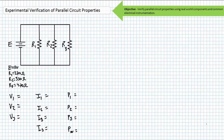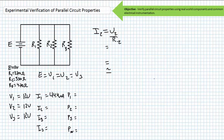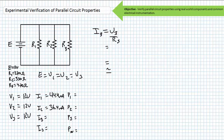Here's how I'm going to solve for the desired quantities — you may have used different steps in a different sequence, but our answers should agree. I'll start by using the most fundamental basic parallel property: the voltage across elements in parallel is the same. E equals V1 equals V2 equals V3. If the source voltage is 12 volts, so is V1, V2, and V3. With known voltage drops across known resistors, we can use Ohm's law: I1 equals V1 divided by R1, giving approximately 44.4 mA; I2 equals V2 divided by R2, giving approximately 36.4 mA; I3 equals V3 divided by R3, giving approximately 25.5 mA.